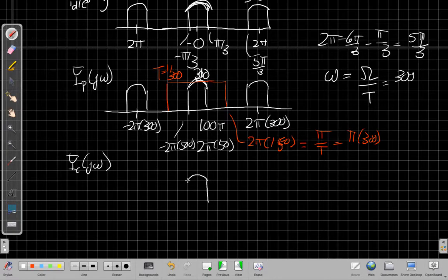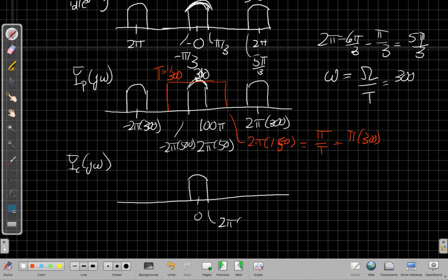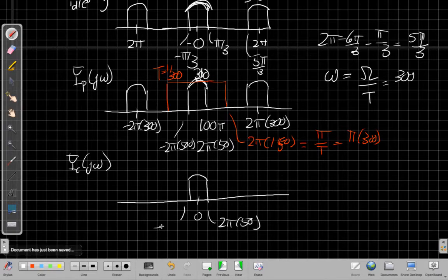So I end up with a signal that has edges at 2π times 50 and minus 2π times 50.